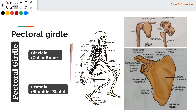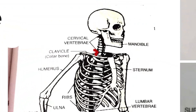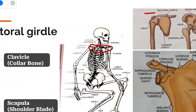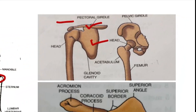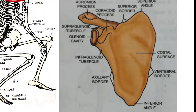The pectoral girdle, or shoulder girdle, consists of two bones: the clavicle (collar bone) and the scapula (shoulder blade). The scapula is a triangular flattened bone, and the clavicle (collar bone) is attached to it.